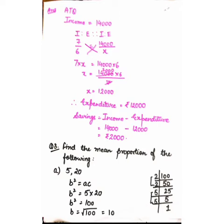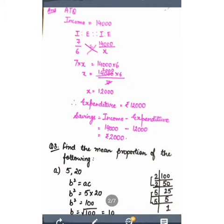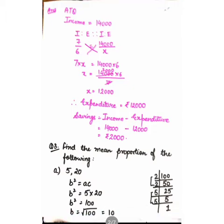To remove the squared sign, we put the square root of 100 and use prime factorization: 2×50 = 100, 2×25 = 50, 5×5 = 25, 5×1 = 5. As you can see, 2 appears twice and 5 appears twice. Taking one of each: 2 × 5 = 10. So 10 is the square root of 100, and the mean proportion is 10.